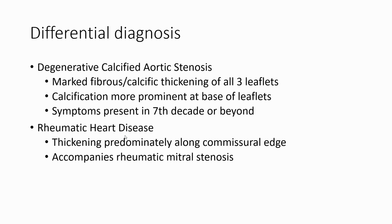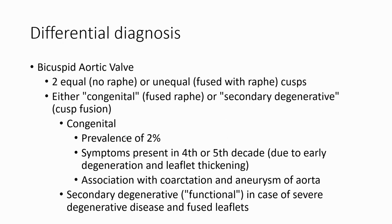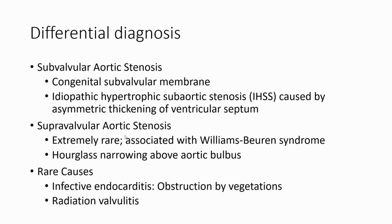The differential diagnosis for aortic stenosis includes: first, degenerative calcified aortic stenosis; second, rheumatic heart disease; third, bicuspid aortic valve; fourth, subvalvular aortic stenosis, which can be congenital or idiopathic; and fifth, supra-valvular aortic stenosis, which is extremely rare and usually associated with Williams-Beuren syndrome. A rare cause is infective endocarditis, which can cause aortic stenosis by vegetation.